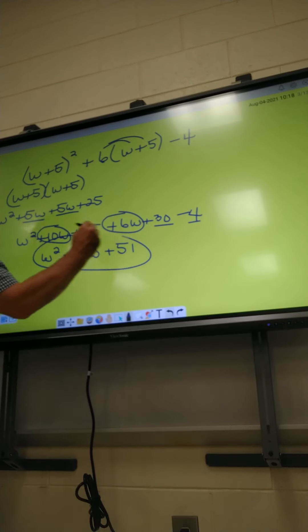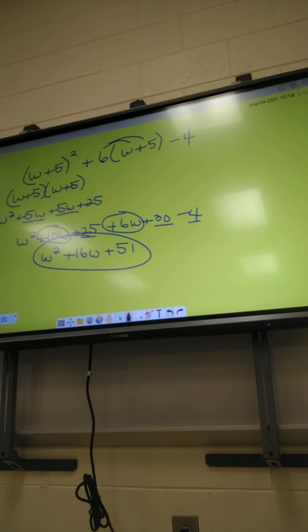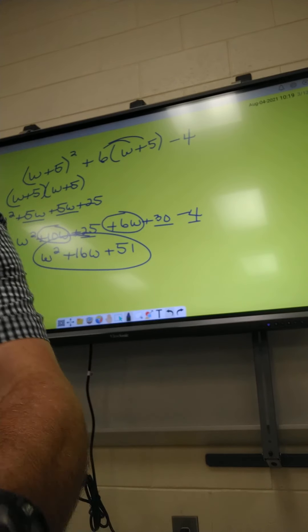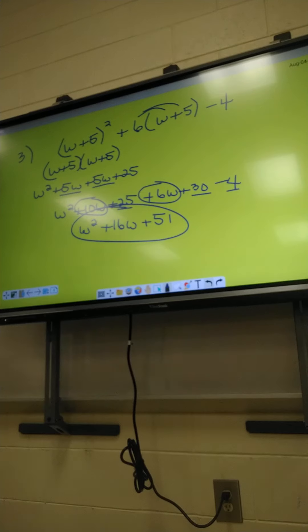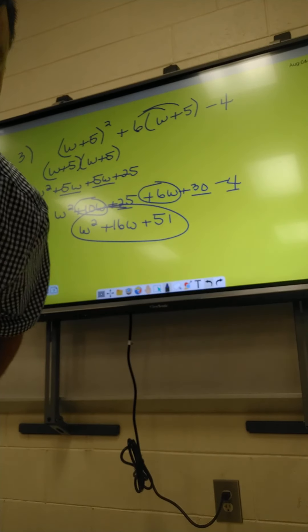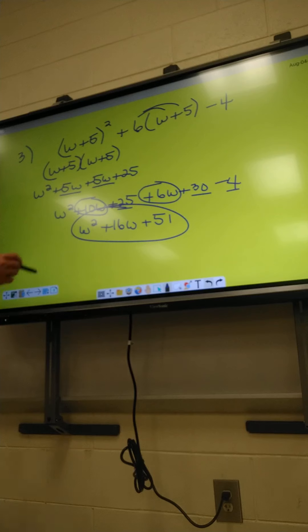Alright, so that should be our answer on number 3. Where did I get 25 from? I did 5 times 5 and got 25. Alright, y'all ready to go to number 4?